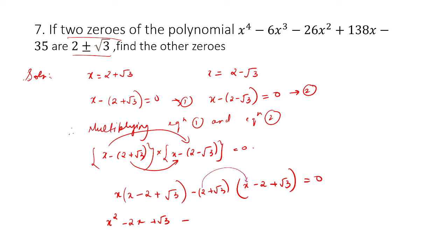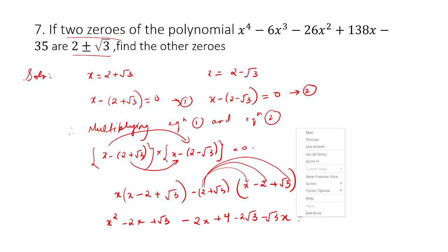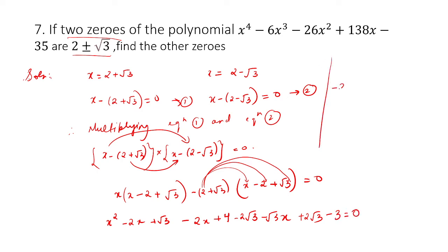Now for the next terms, multiplying turn by turn, be very careful with the sign. This gives minus 2x, minus into minus becomes plus 4, minus 2 into plus root 3 becomes minus 2 root 3, plus into minus becomes minus root 3 x, plus into minus times minus 2 becomes plus 2 root 3, and minus root 3 into plus root 3 becomes minus 3, equal to 0.